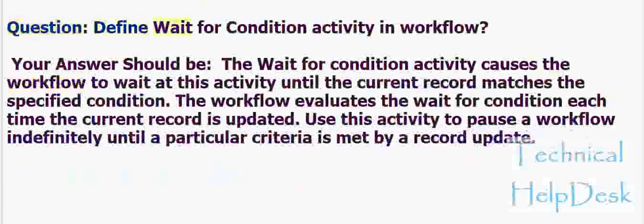Question: Define wait for condition activity in workflow. The wait for condition activity causes the workflow to wait at this activity until the current record matches the specified condition. The workflow evaluates the wait for condition each time the current record is updated. Use this activity to pause a workflow indefinitely until a particular criteria is met by a record update.